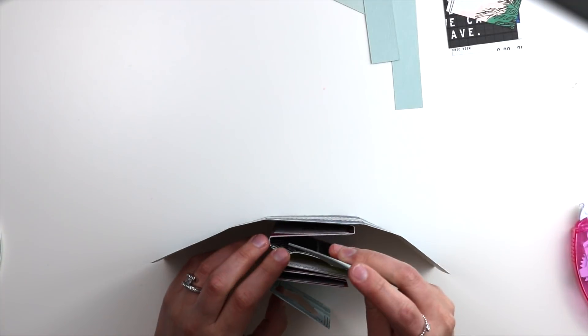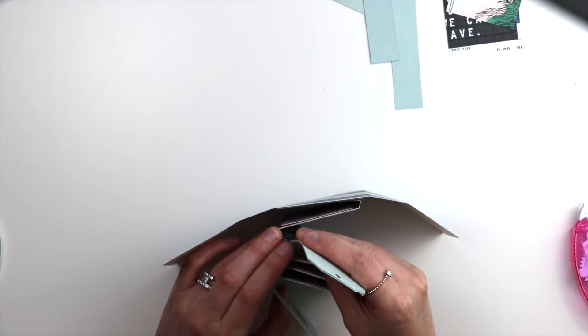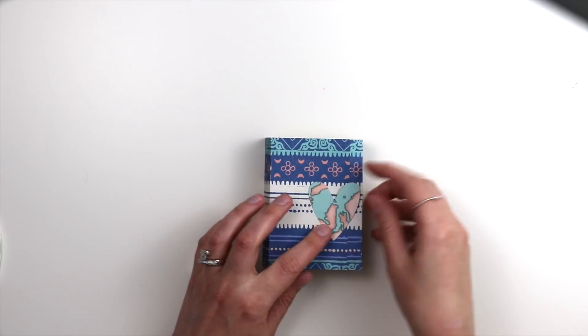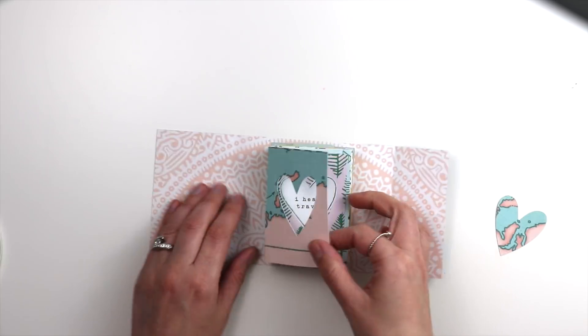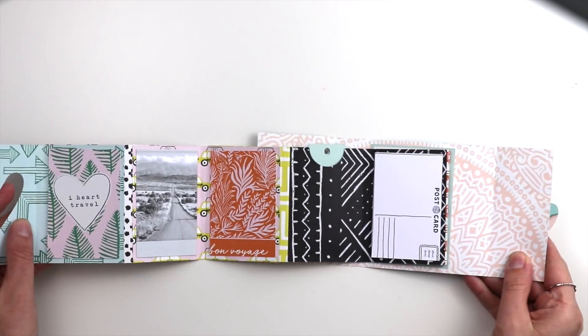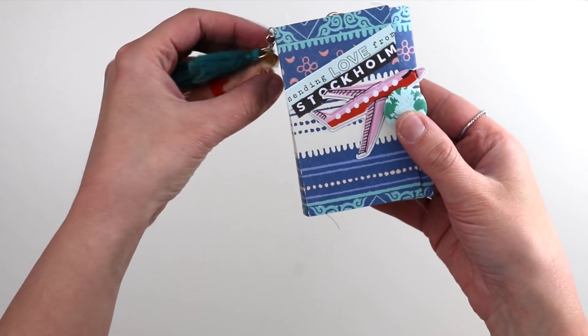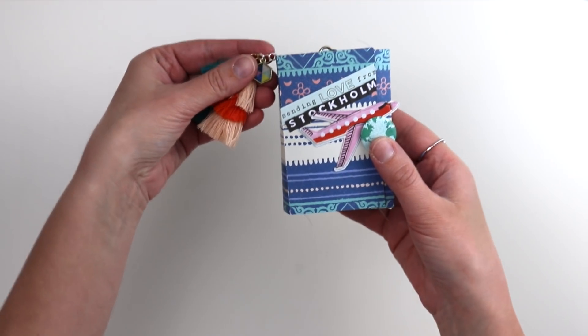That is the basic assembly of this accordion mini album with tags. Speaking of the tags, here are the tags. They fit nicely into this notched pocket. I also hand cut a few more using those tags as a template. There's the heart that comes from one of the papers, so you can use that as an embellishment. And now I'm going to show you a flip through of the completed album.